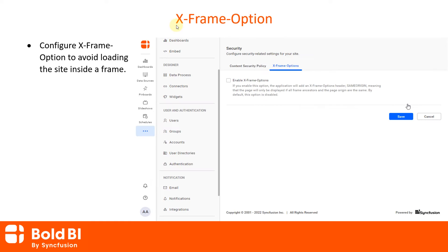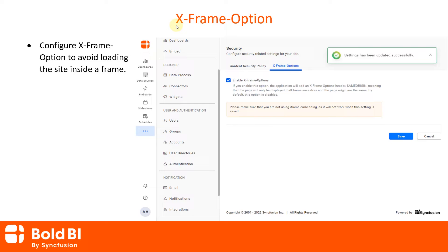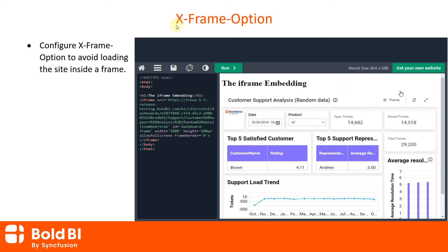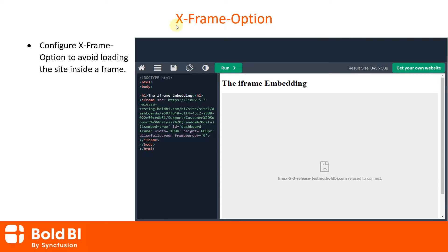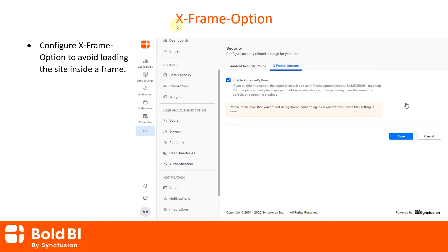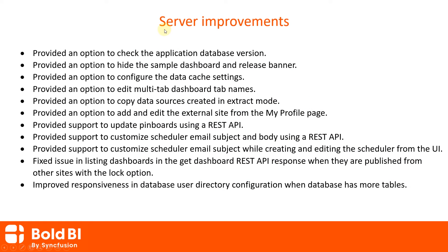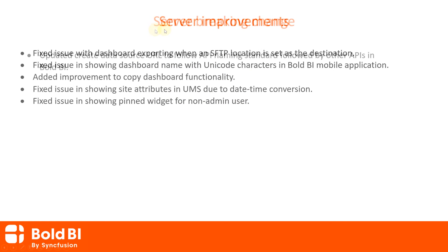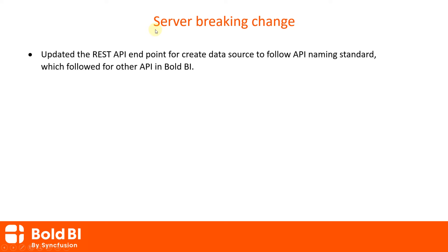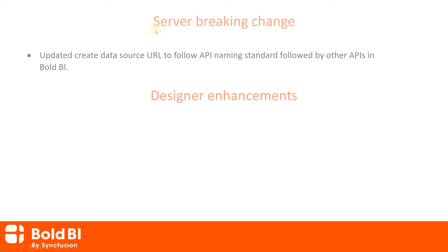We have provided support to configure the X-Frame option to avoid loading the site inside a frame. You can enable or disable the X-Frame option on the settings page. By enabling this option, your page will only be displayed if all frame ancestors and the page origin are the same. Let's see the server improvements we have made. We do have one breaking change for our server.